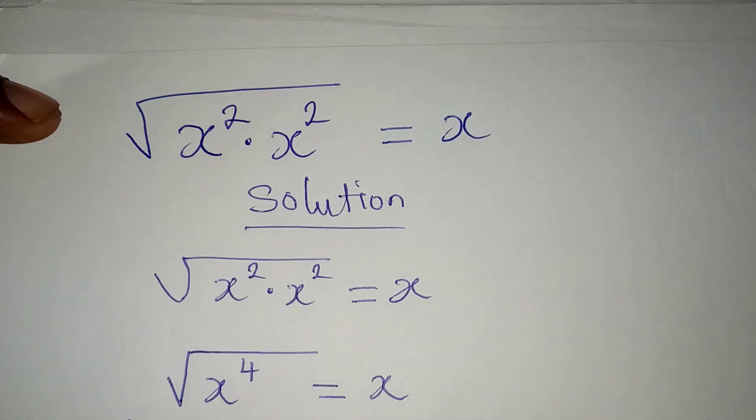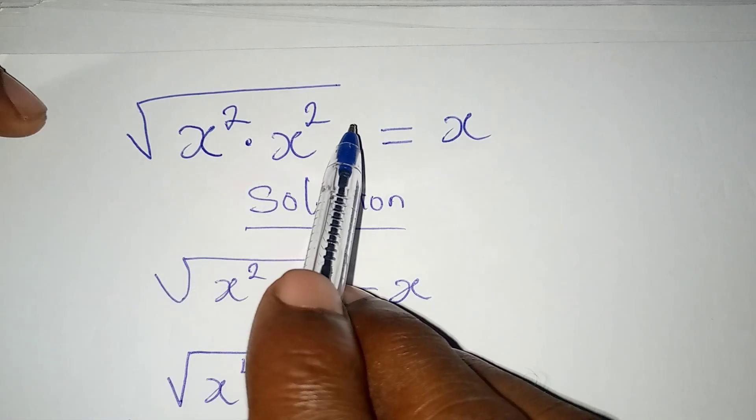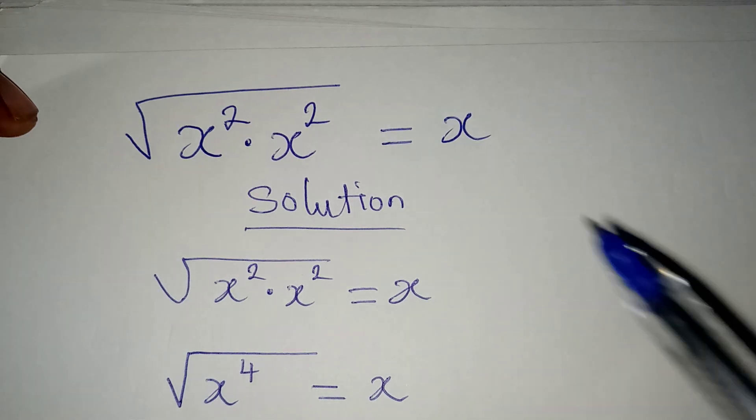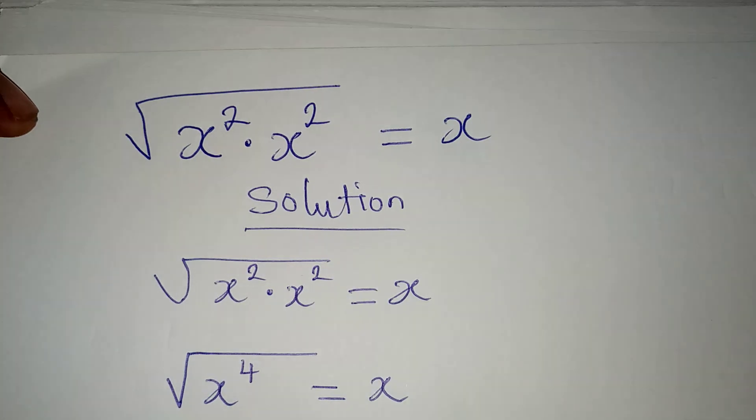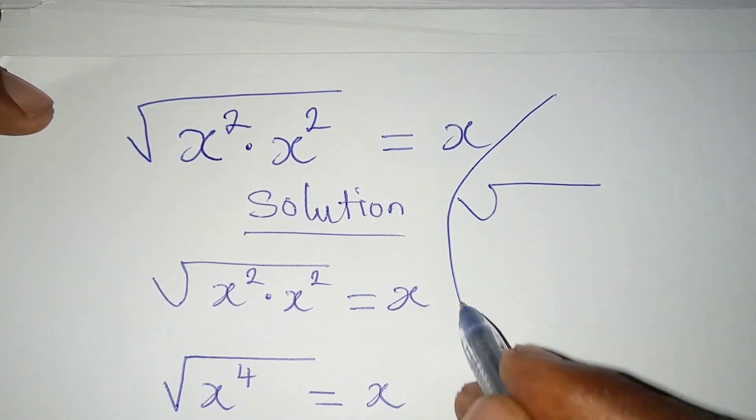Remember, we are saying that x is equal to 0 or x is equal to 1. If you put 0 here, it is correct automatically. But if you put 1, it is also going to be correct. Now let me work it here.